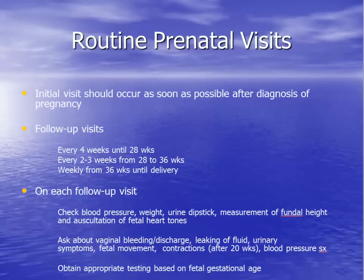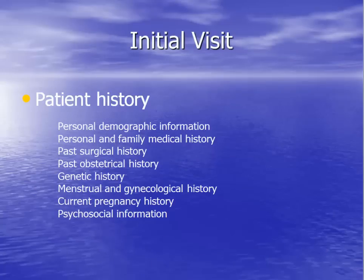Antepartum care consists of regularly scheduled visits to evaluate the mom and fetus for developing problems and to promote healthy behaviors. Because complications are most likely to occur in the third trimester, visits are scheduled more frequently toward the end of pregnancy. The information obtained at each prenatal visit is listed on this slide. The first prenatal visit is used to collect demographic and health information from the patient, perform a physical examination, estimate the age of the pregnancy, and order prenatal laboratory tests.